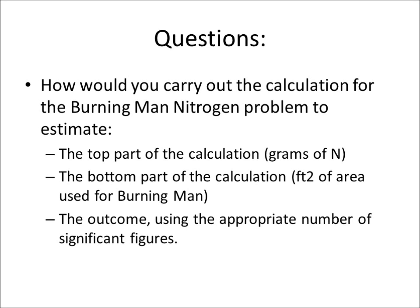Here are a few questions to consider as we get into this piece about Excel. The example used for the Burning Man nitrogen problem was done on a blackboard with a calculator. How would you carry out that calculation to estimate all elements — including the number of grams of nitrogen, the area in square feet, and the outcome using the appropriate number of significant figures? Formatting cells so our outcome reflects the correct significant figures is important.